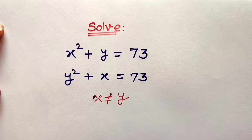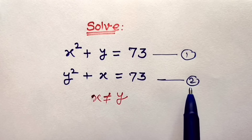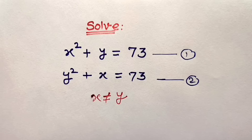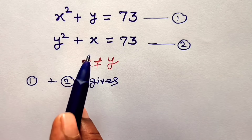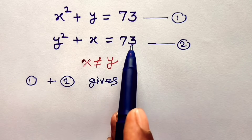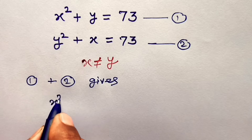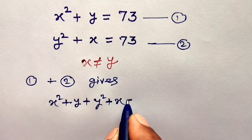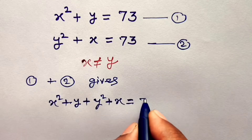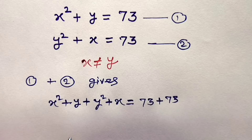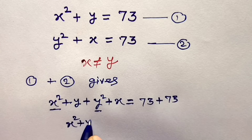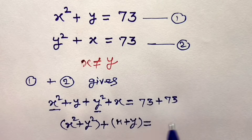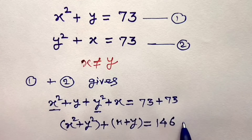Let us assume this is equation number 1, and this is equation number 2. To solve this system, first of all let us take the addition of these two equations, and then the subtraction of these two equations. Equation 1 plus 2 gives: addition of left hand sides equals addition of right hand sides. So this can be written as x squared plus y, plus y squared plus x, is equal to 73 plus 73. Collecting square terms together, x squared plus y squared, plus x plus y, is equal to 146. Consider this as equation number 3.